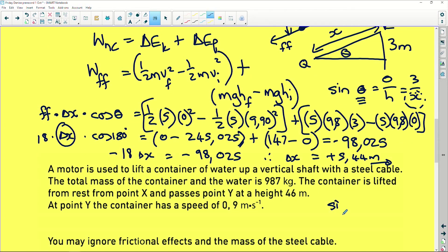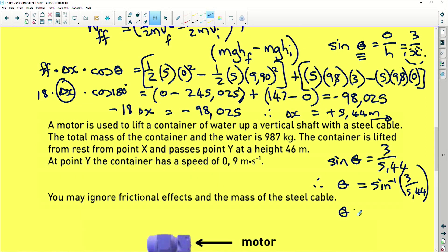So now we go sine theta equals 3 over 5.44. So now we use our calculator. Therefore theta is equal to the inverse function of 3 over 5.44. And you work out theta, and theta is equal to approximately 33.4 degrees. And there we go.